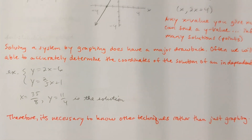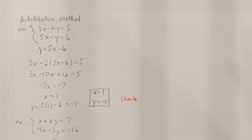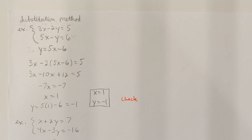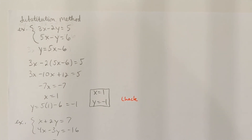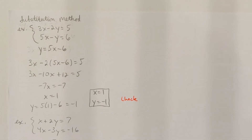There are some other methods we need to know that are going to be more important techniques for solving a system. There are two other methods presented in this section: the substitution method and the elimination method. I'll show you a bunch of examples of each one. So with the substitution method, here's an example.